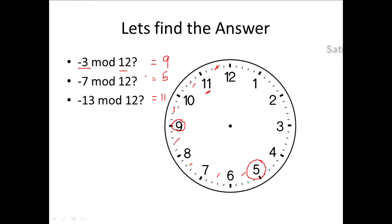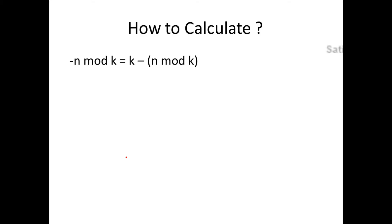That's how you can compute the modulo of a negative number using the clock. But you might ask: what if I have minus 3 mod 20, or minus 3 mod 50? Should I construct a 20 o'clock and traverse in reverse? For this we have a formula: minus n mod k can be computed as k minus (n mod k). Let's take an example for better understanding.